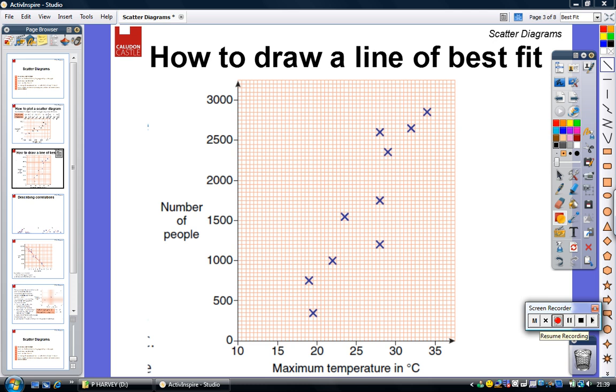When I plot my line of best fit, I'm trying to get the line as close to as many points as possible, so I'm thinking that the line needs to go along in this direction. What I'm also trying to do is get it so that half the points are above the line and half below, and that it cuts through the points. So what I'm going to try and do is draw my line of best fit as so.